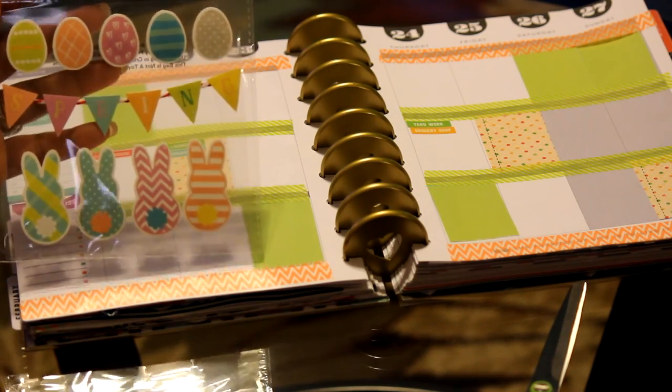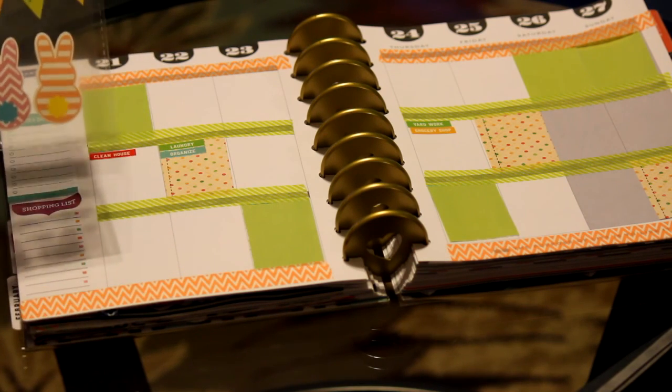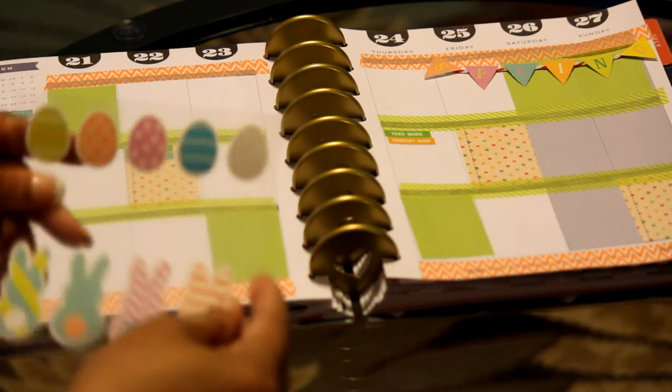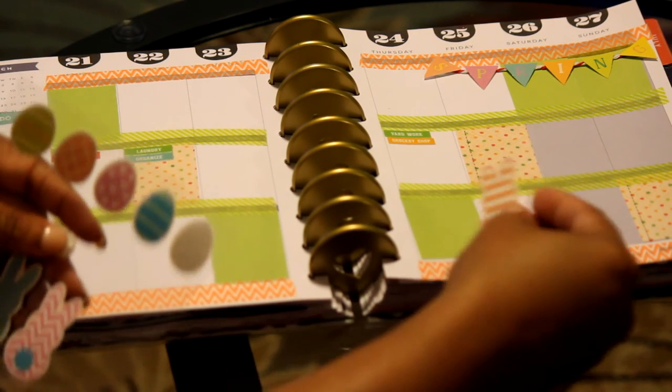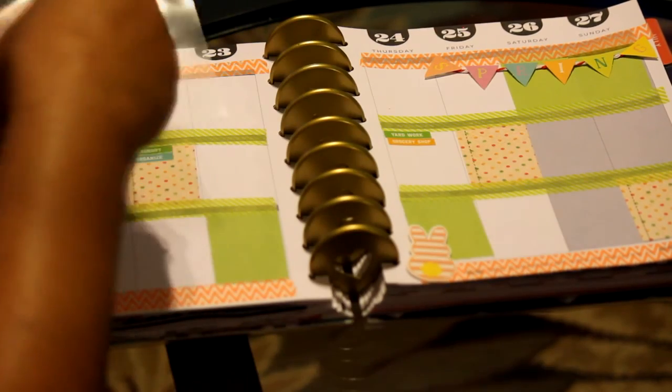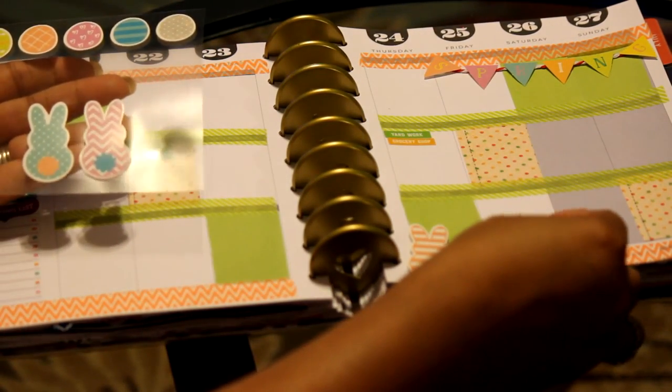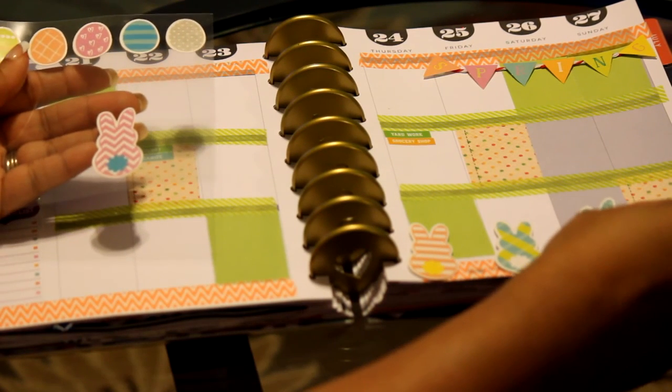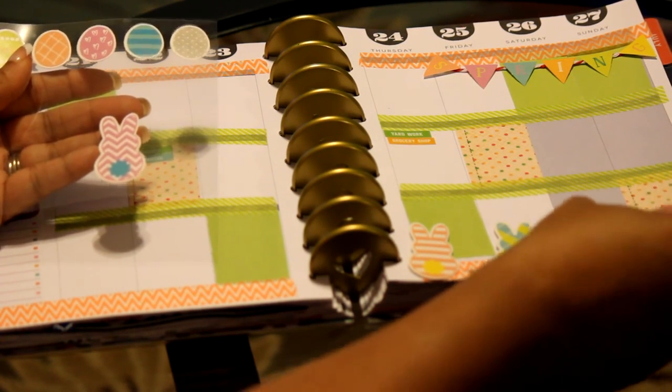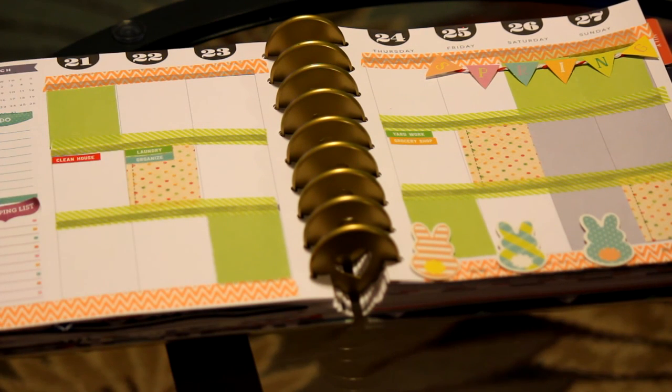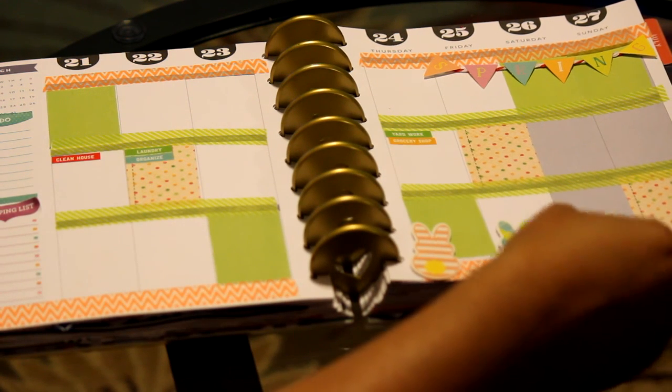You may recognize these, these came from the Target one spot or Bullseye Playground. I'm going to use this banner here to go over my weekend area. Okay we also have these bunnies and these eggs, I'm going to place them around. So I'm just going to add these bunnies down here at the bottom.